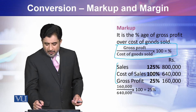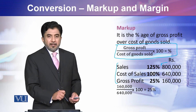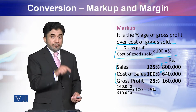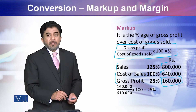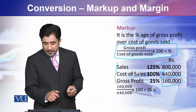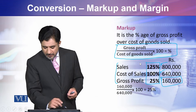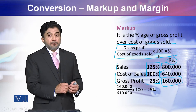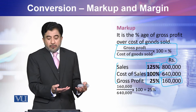Looking at our example: Sales are 800,000; Cost of Goods Sold is 640,000; and Gross Profit is 160,000. This is the absolute information we have with us.